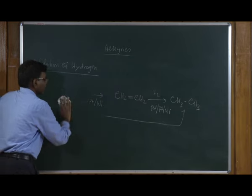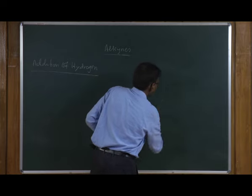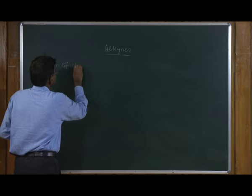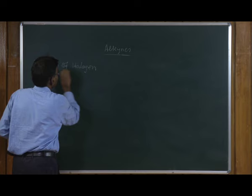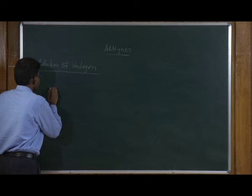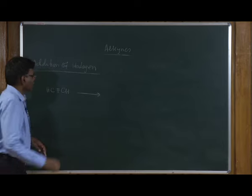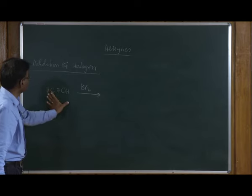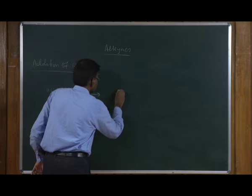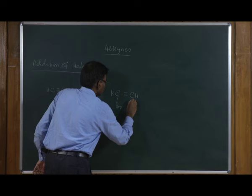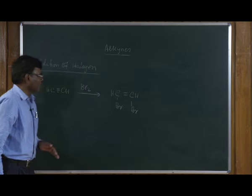Alkynes can also be reduced to alkenes with trans stereochemistry using sodium in liquid ammonia. Depending on the reaction conditions, you can obtain either a cis or trans alkene, and this catalytic hydrogenation is a stereospecific reaction where hydrogen adds to the same side of the triple bond.